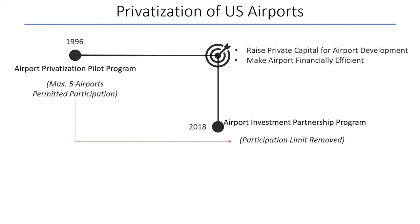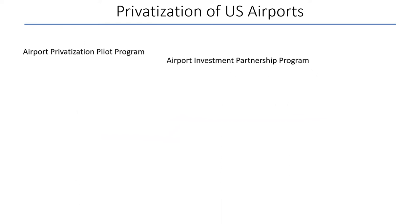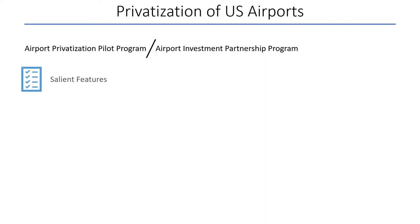Some salient features in the terms and conditions of the program are important to discuss to develop a better understanding of the matter. The first condition was that commercial airports could not be sold to private parties — they could only be leased.